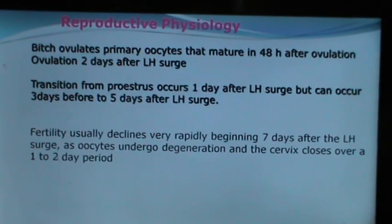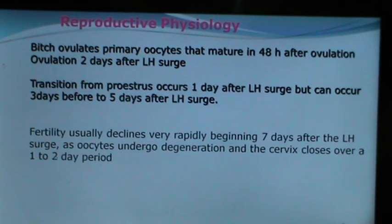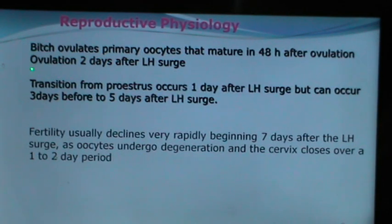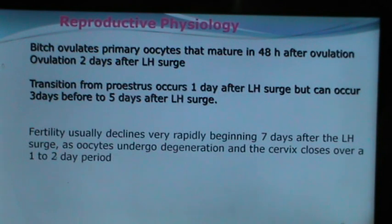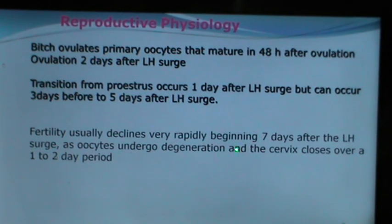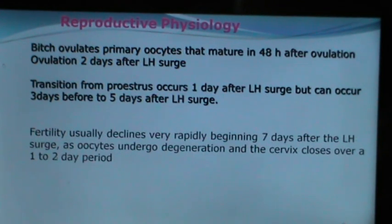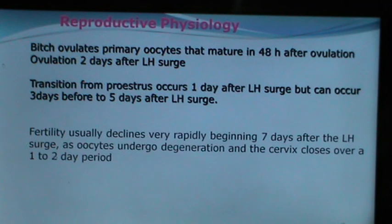The bitch ovulates a primary oocyte which matures 48 hours after ovulation, and ovulation occurs 2 days after an LH surge. The transition from proestrus occurs 1 day after the LH surge but can range from 3 days before to 5 days after. Fertility usually declines rapidly beginning 7 days after the LH surge as oocytes undergo degeneration and the cervix closes over a 1 to 2 day period.